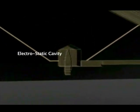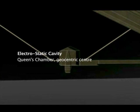This is the electrostatic cavity, which is the Queen's Chamber. This is what the research is about, how the shape itself could potentially act as not only an ideal antenna but a capacitor collecting negative ions at its center.